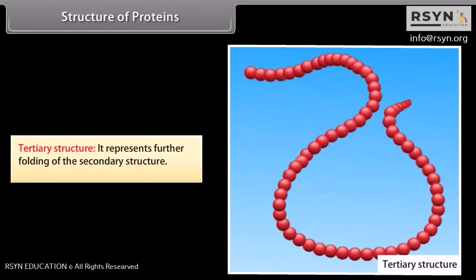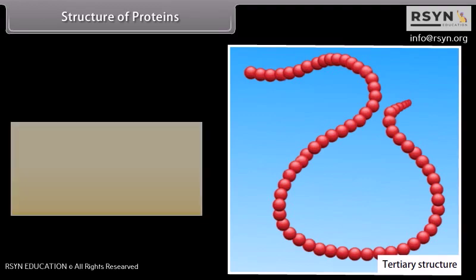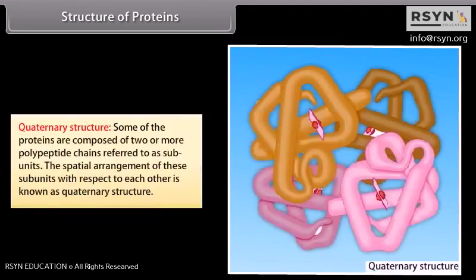Quaternary structure: some proteins are composed of two or more polypeptide chains referred to as subunits. The spatial arrangement of these subunits with respect to each other is known as quaternary structure.